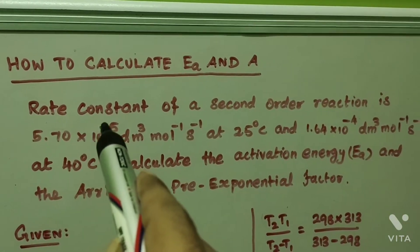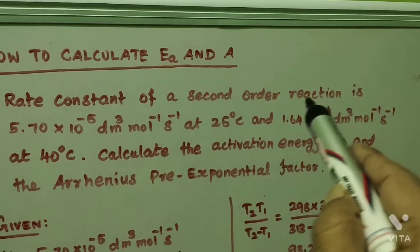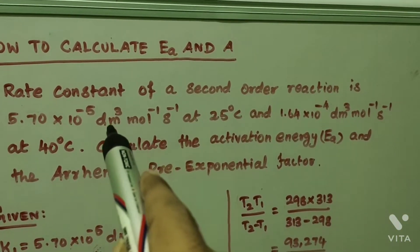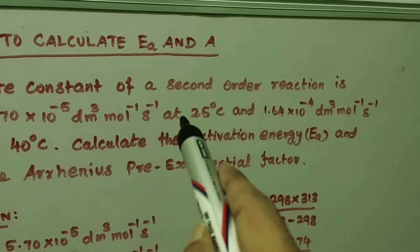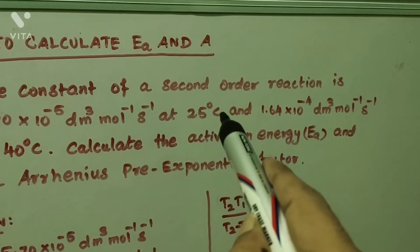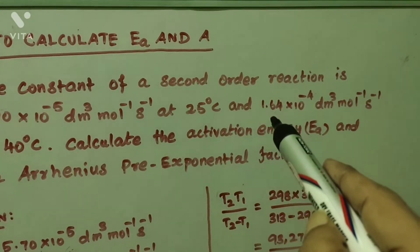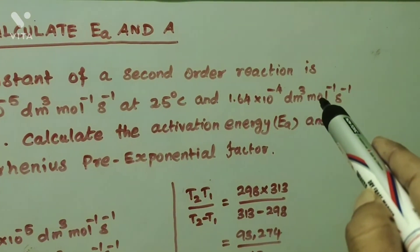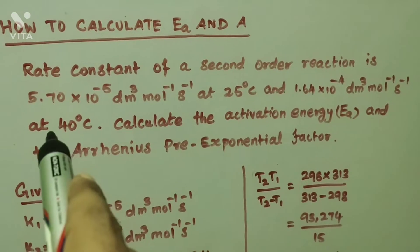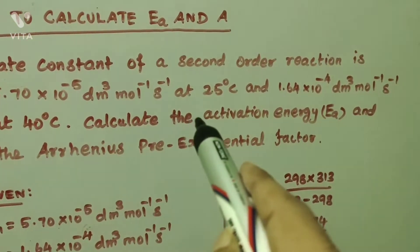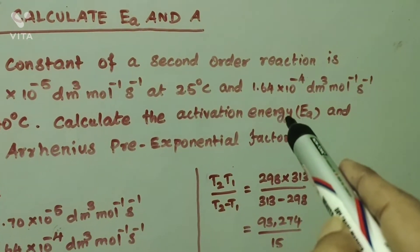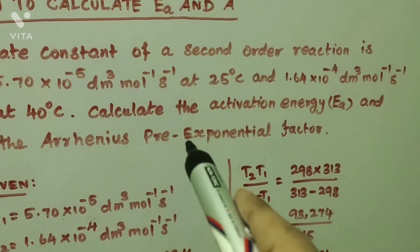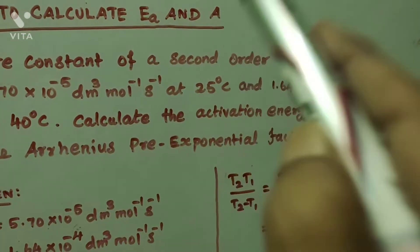The question is: the rate constant of a second-order reaction is 5.70 × 10⁻⁵ dm³ mol⁻¹ s⁻¹ at 25°C, and 1.64 × 10⁻⁴ dm³ mol⁻¹ s⁻¹ at 40°C. Calculate the activation energy Ea and the Arrhenius pre-exponential factor A.